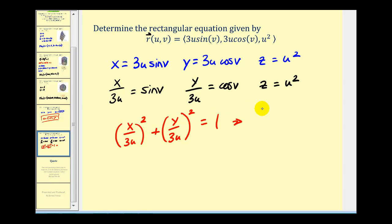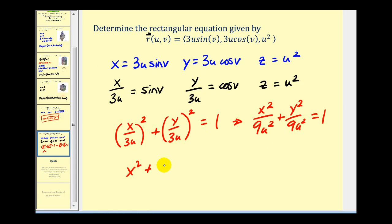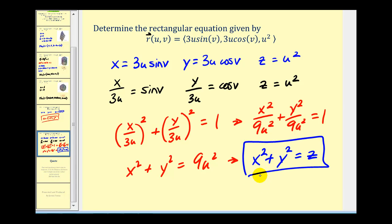This gives us x squared over 9u squared plus y squared over 9u squared equals 1. Multiplying everything by 9u squared gives x squared plus y squared equals 9u squared. Since u squared equals z, we know that x squared plus y squared must equal z. And we have our rectangular equation for the given parametrization. I hope you found these examples helpful. Thank you for watching.